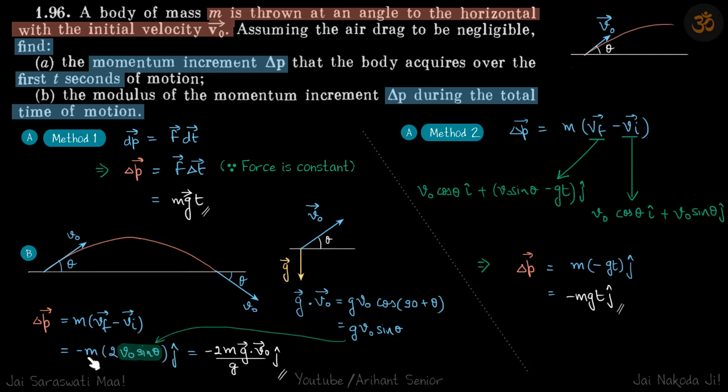We are not given the value of theta, so for that we'll see that g vector is downwards and v naught is at angle theta with the horizontal. So g dot v naught will be g v naught into cos of 90 plus theta, or g into v naught sine theta. From here we'll put the value of v naught sine theta and get our answer: minus 2m into g dot v naught by g into j cap. Our answers.